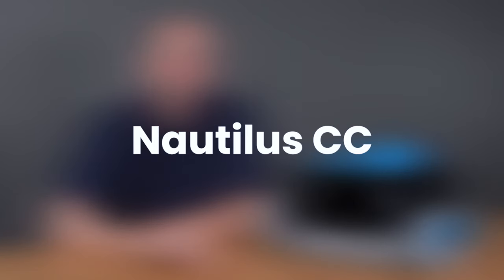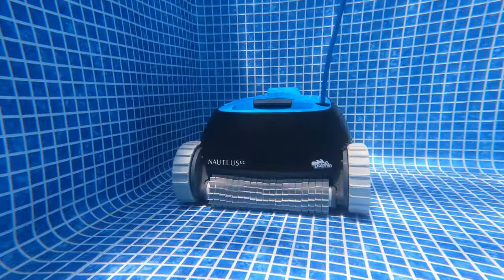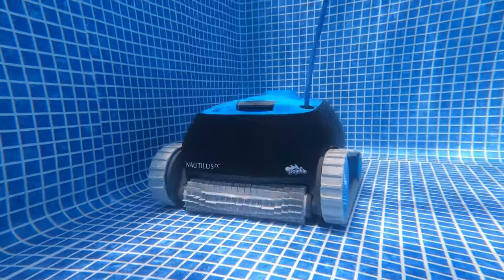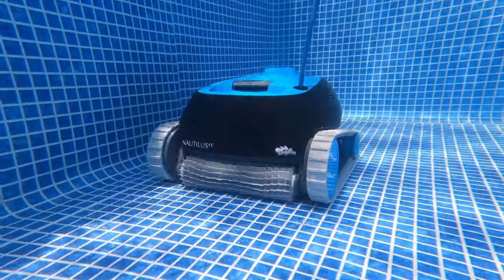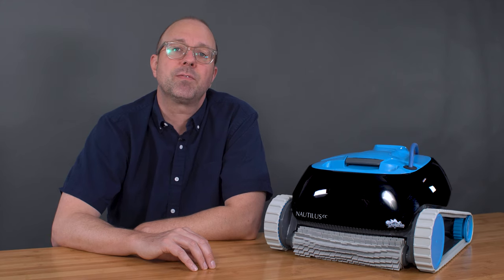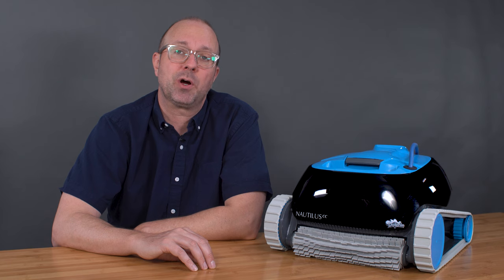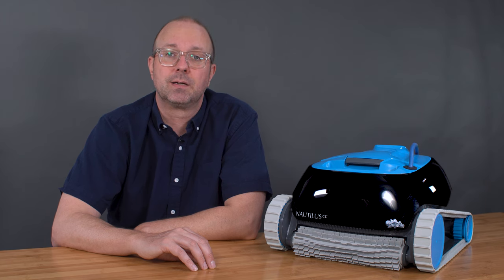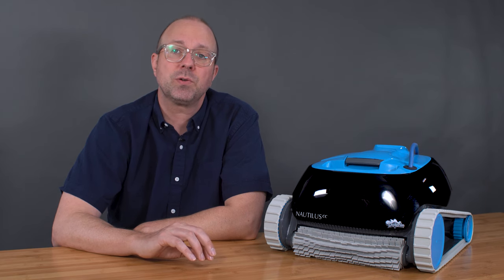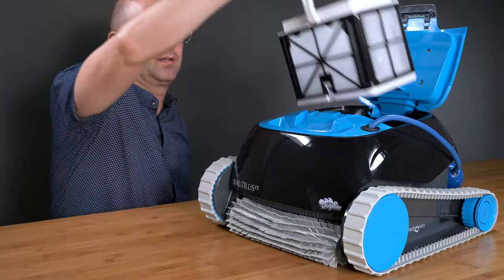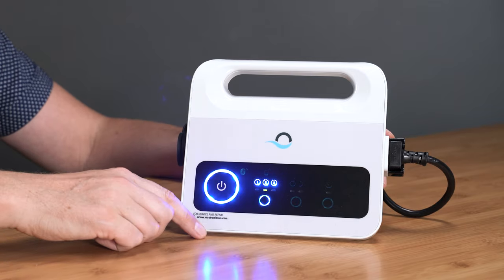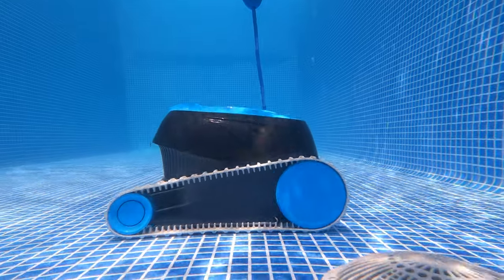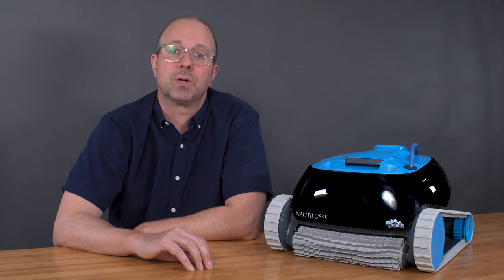Next up is the Nautilus CC, the baby brother to the Nautilus CC Plus. The Nautilus CC is another high-volume unit sold mostly on Amazon. It's designed for above-ground and small in-ground pools up to 33 feet. It can clean the floors and walls of your pool, includes the standard filter basket, a programmable power supply, a two-hour cleaning cycle, and a two-year warranty.